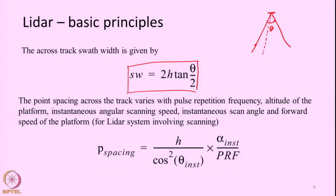In satellite systems, since traditional scanning may not happen, they instead send multiple beams oriented at different distances. These measure the range of footprints separated by certain distances, and as the satellite moves in different orbits it covers the entire ground. One more important thing to consider is point spacing in both the along-track and across-track directions.